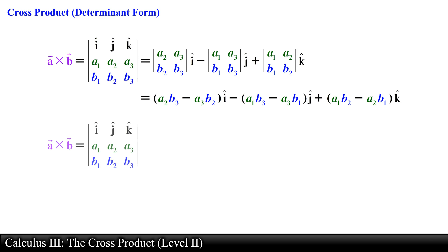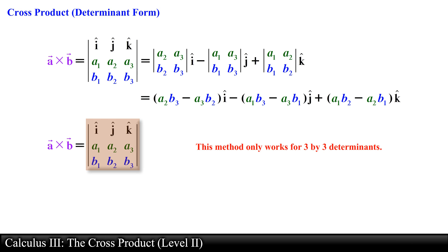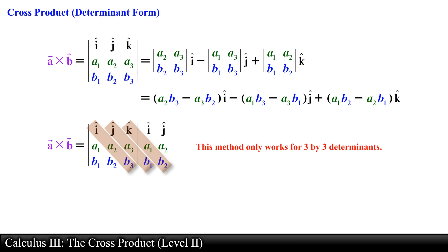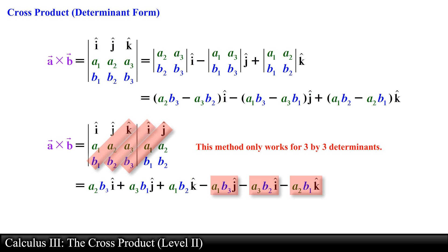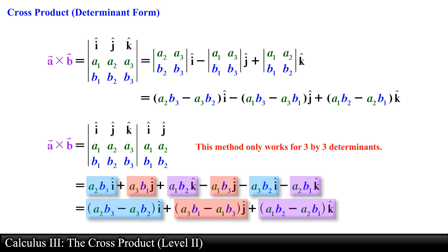A second method of computing the cross product exists and is slightly easier, but many textbooks don't cover it because it only works for 3 by 3 determinants. This method modifies the determinant form of the cross product by copying the first two columns onto the end. We now have 3 diagonals that move downward from left to right and 3 diagonals that move downward from right to left. We multiply along each of the 6 diagonals, adding the products of diagonals moving left to right and subtracting the products of diagonals moving right to left. In the end you simplify by grouping the terms that contain the same unit vector.